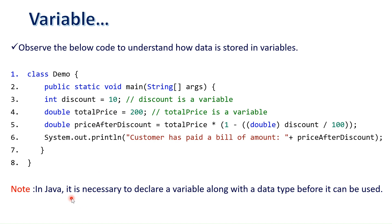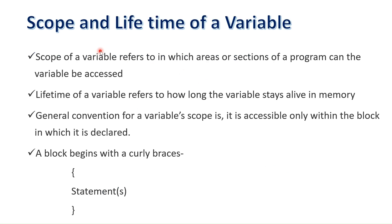In Java, it is necessary to declare a variable along with the data type before it can be used. If you want to use a variable, you must declare it, otherwise it shows a compile time error.